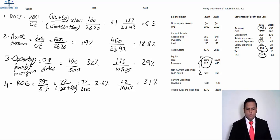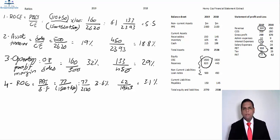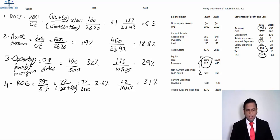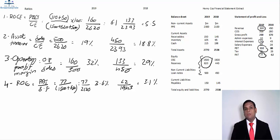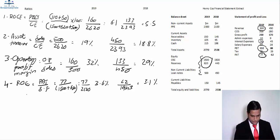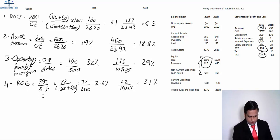There is an increase in ROE but not by a great margin — only 0.5%. However there is an increase, which means the company is still in a profitable position and is capable of giving returns to the shareholders.